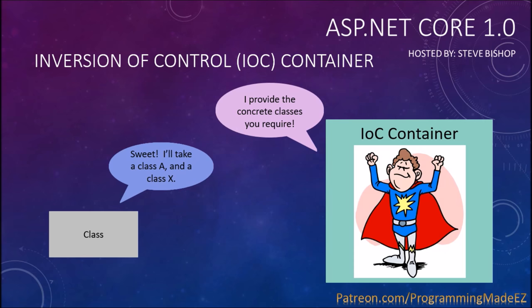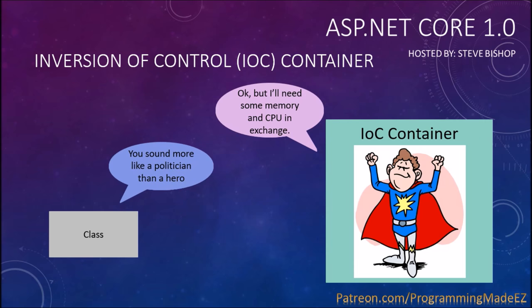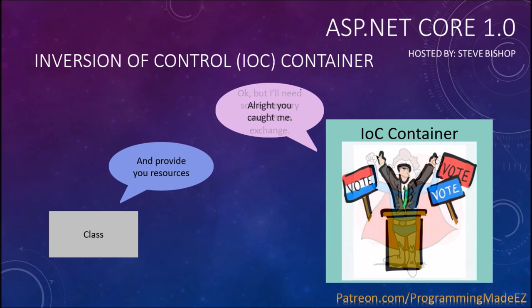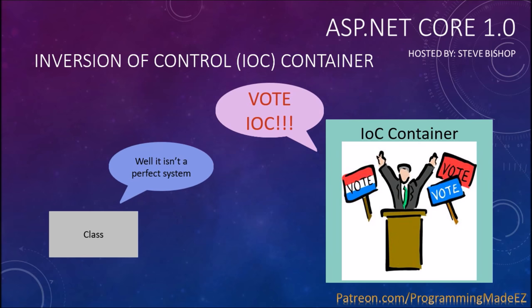The class responds, 'Sweet! I'll take a class A and a class X.' The IOC container says, 'Okay but I'll need some memory and CPU in exchange.' The class replies, 'You sound more like a politician than a hero. We have to register with you and provide you resources?' The container admits, 'Alright you caught me. It isn't a perfect system but it's the one that got elected by the people.'